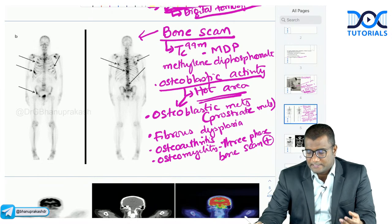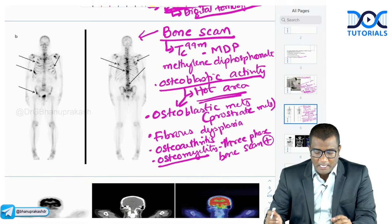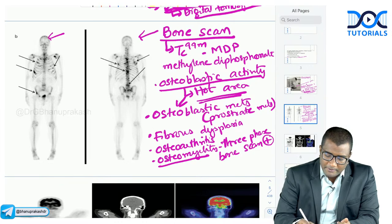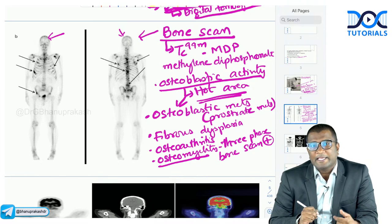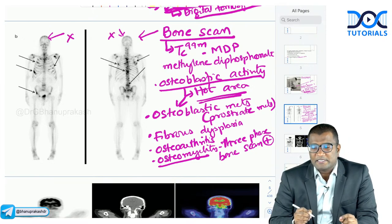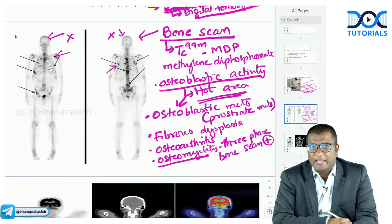How to differentiate a bone scan from a PET scan: look at the uptake in the brain. PET scan uses 18-FDG (fluorodeoxyglucose), which is taken up by neurons, so you will see brain uptake. If there is no brain uptake, it is a bone scan. You can see hot areas in this image indicating osteoblastic metastasis. Look at brain parenchymal uptake to differentiate PET scan from bone scan.